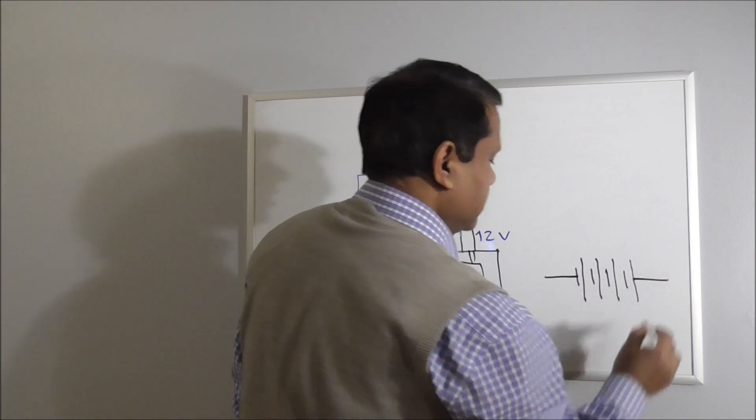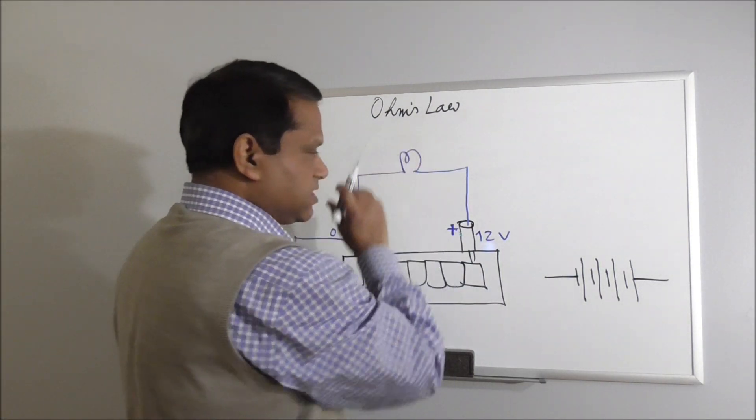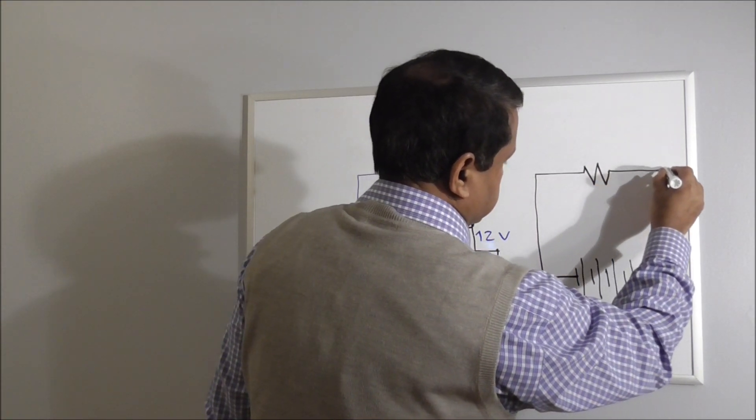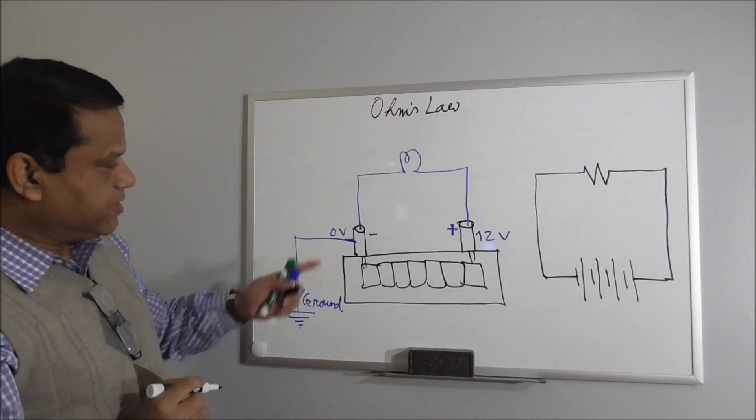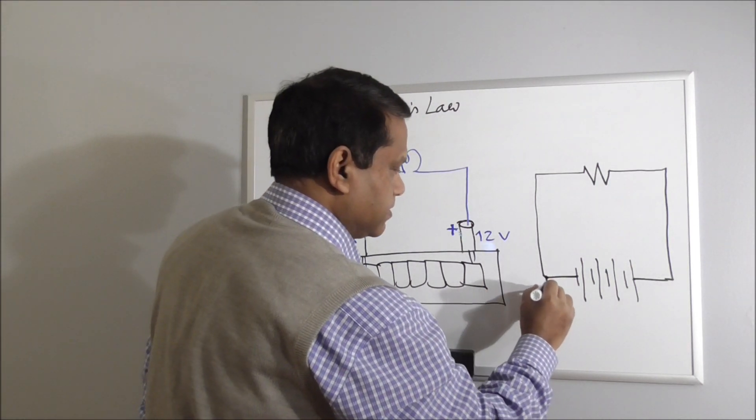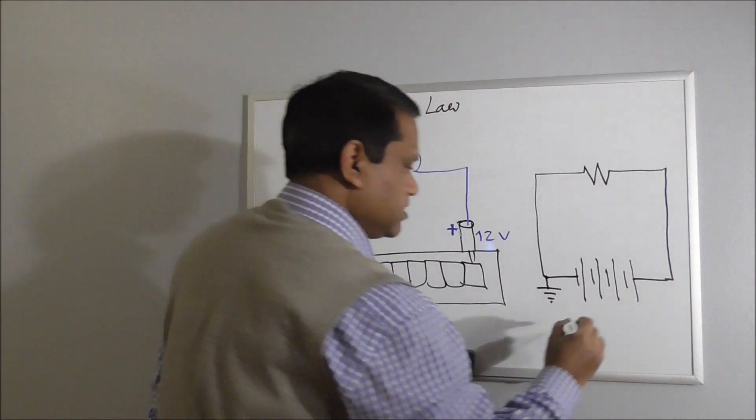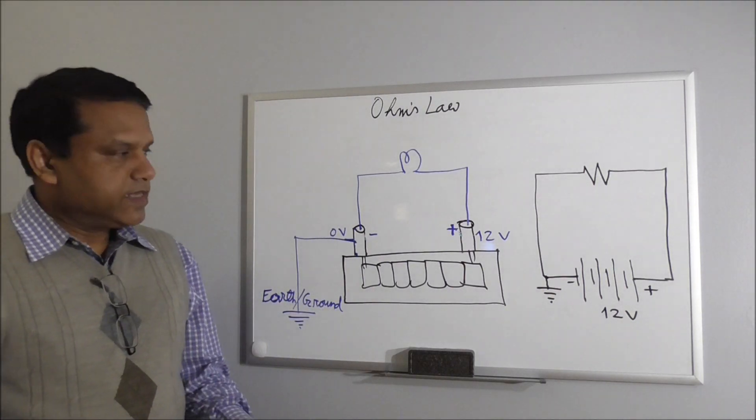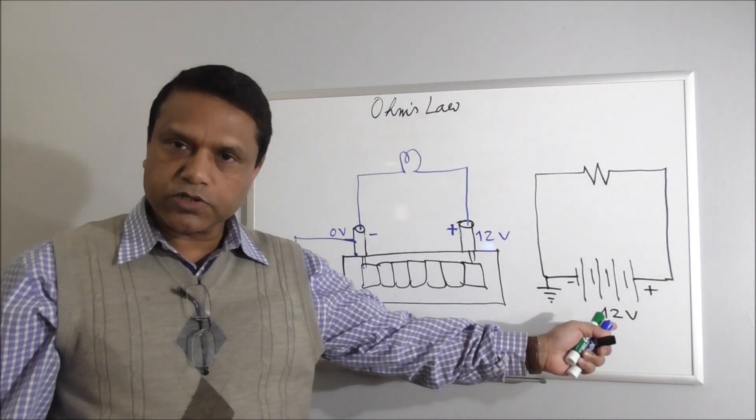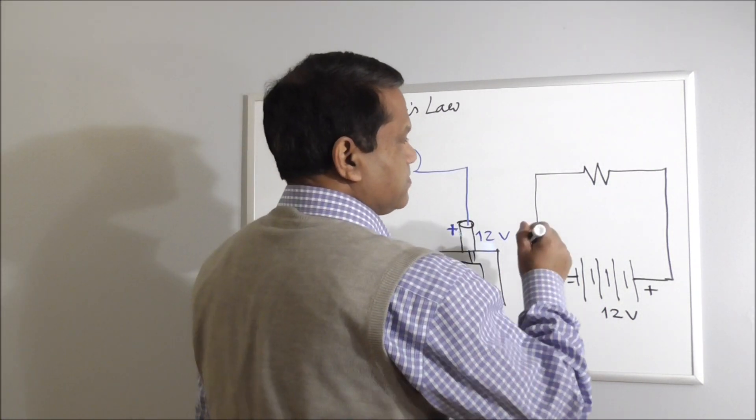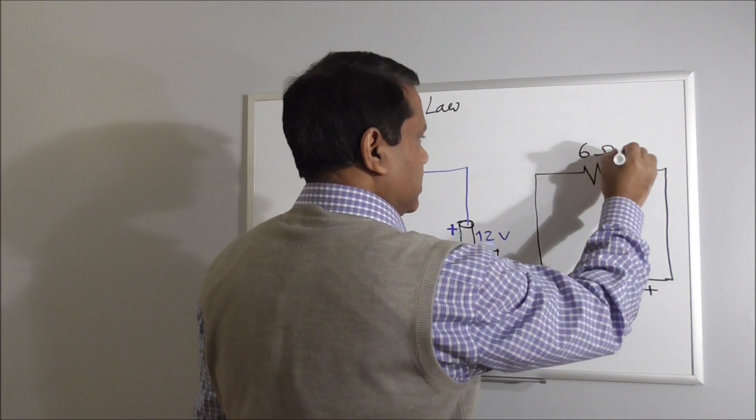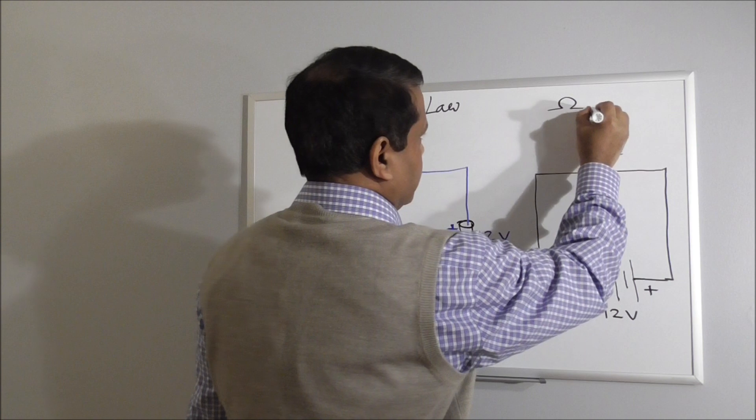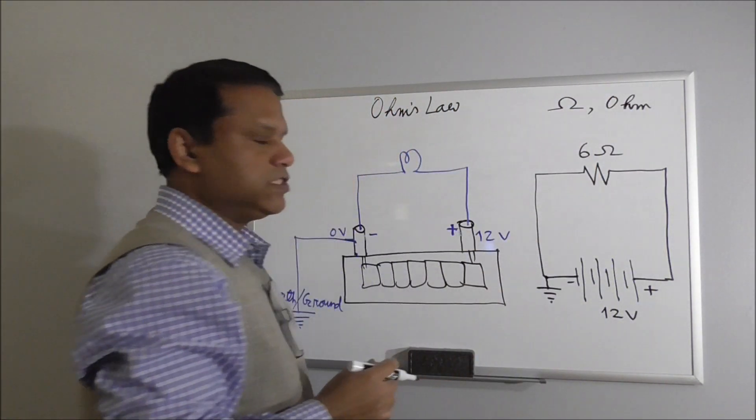And the resistance also has a symbol. This side of the battery is grounded, so we can ground it. And this is the positive end, this is the negative end. Resistance has a unit. Just like voltage source has a unit, a volt, resistance has a unit of Ohm. Let's assume this has 6 Ohm resistance. This is the symbolic form of Ohm. This symbol stands for Ohm, which is the unit of resistance.